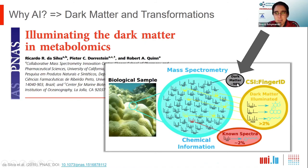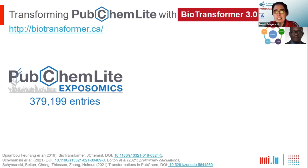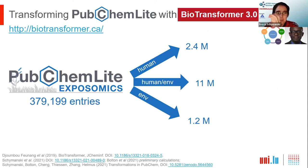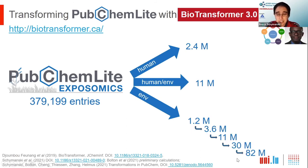Our challenge is really this dark matter in mass spectrometry. From a 2015 figure that still holds today, known spectra cover about 2% of our datasets — we still need to find this dark matter, which is highly likely to be transformations. With PubChem Lite at almost 380,000, putting this through BioTransformer gives 2.4 to 1.2 million. With a combination of human and environmental transformations you get mixtures coming into the environment. In five generations of environmental transformation we're already almost the size of PubChem again.